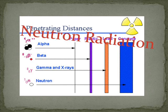Neutron radiation is also encountered in nuclear power plants and high-altitude flight and emitted from some industrial radioactive sources.